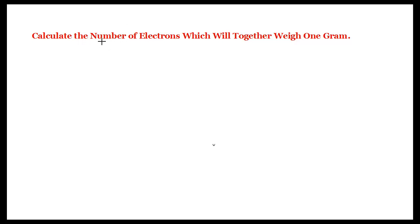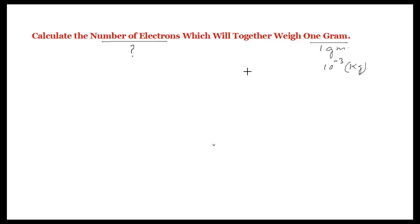Calculate the number of electrons which will together weigh one gram. In this question we have to find the number of electrons whose total weight is equal to one gram. One gram is actually 10 to the power minus 3 kilograms, so we have to find the number of electrons present in 10 to the power minus 3 kilograms of electrons.